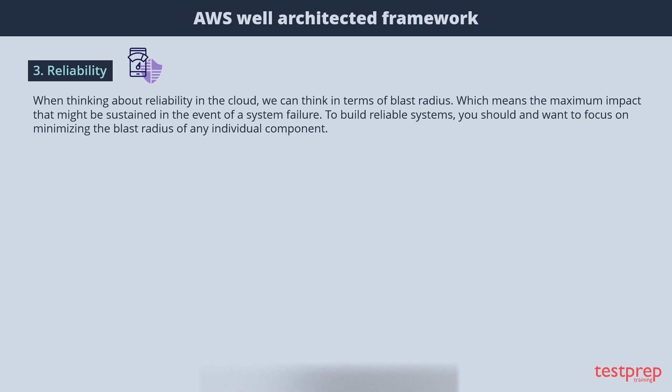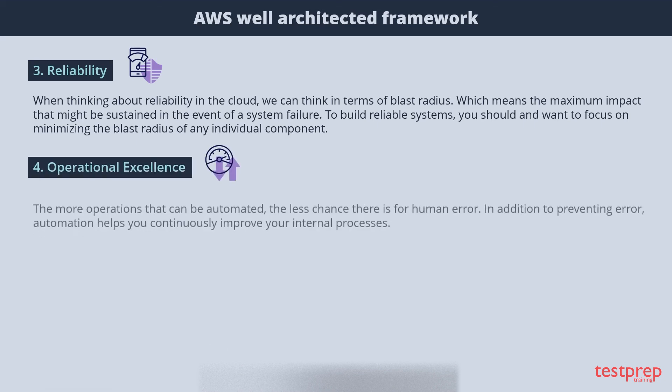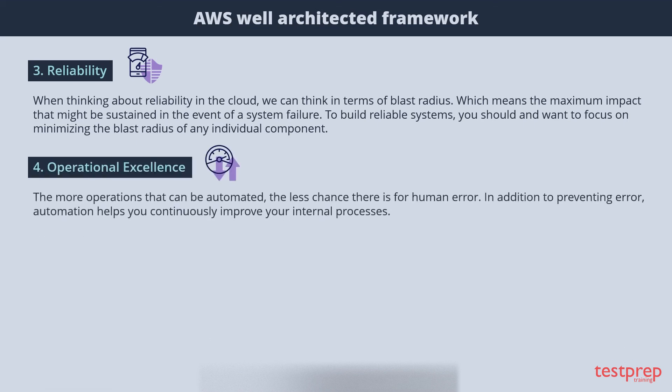For Operational Excellence, the more operations that can be automated, the less chance there is for human error. In addition to preventing errors, automation helps you continuously improve your internal processes.